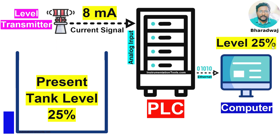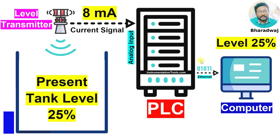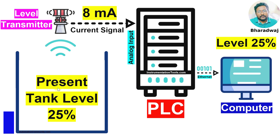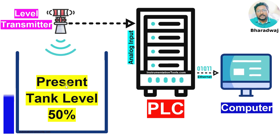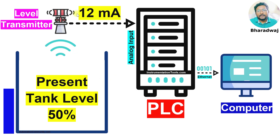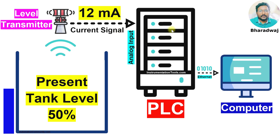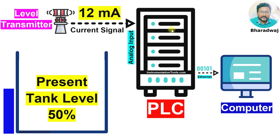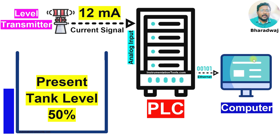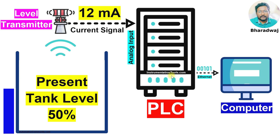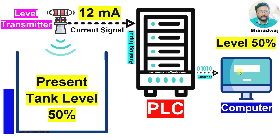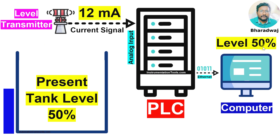Now the tank level is 50%. The transmitter sends 12 mA current signal to the PLC, and the PLC updates the computer graphics tank level value to 50%.